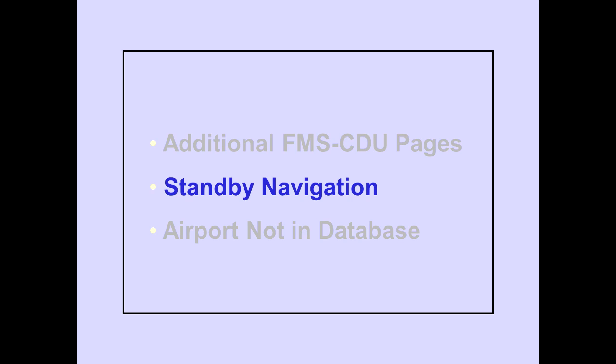Let's discuss Standby Navigation. In the event of dual FMC failure, the Standby Navigation System provides a backup mode of operation. The Standby Navigation System performs lateral navigation computations. LNAV, VNAV, and the Autothrottles are inoperative. All new waypoints for entry into the CDUs must be entered as latitude-longitude coordinates. A route change to one CDU does not change the other two CDUs.